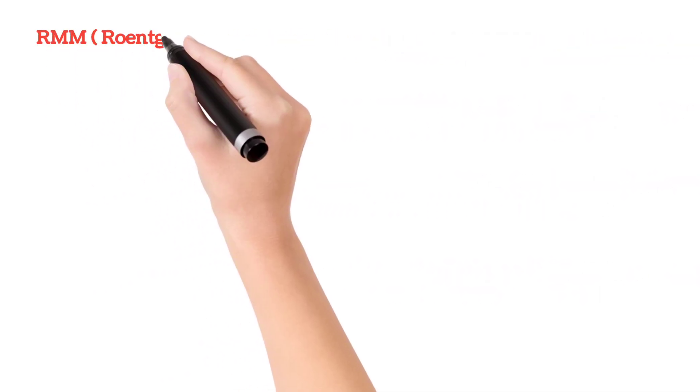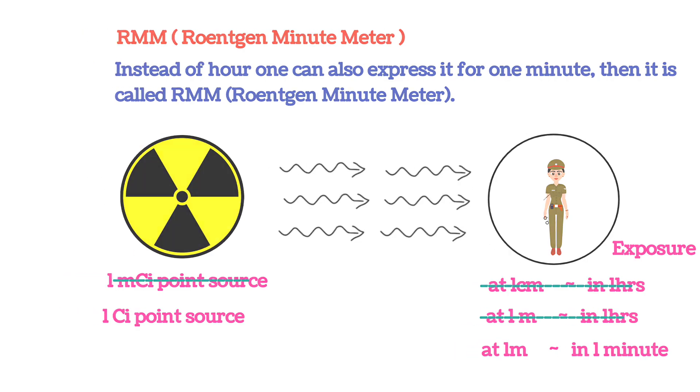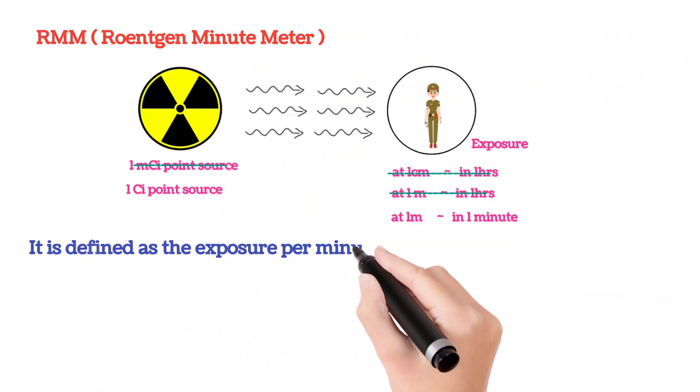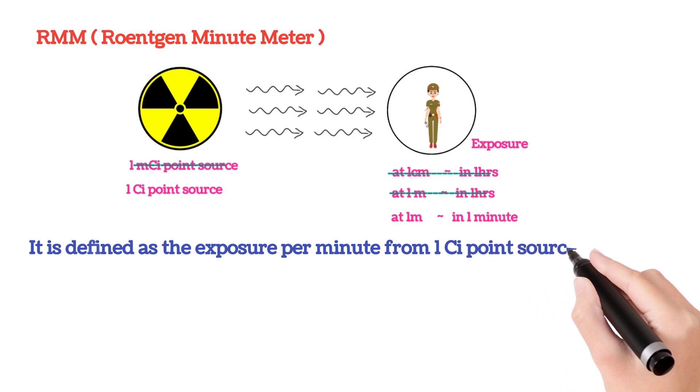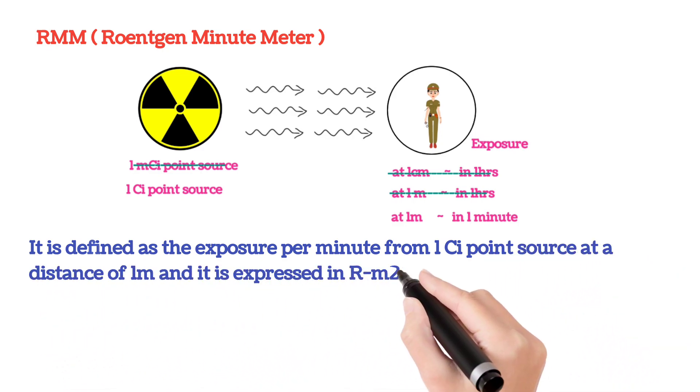Instead of per hour, we can also express it for 1 minute, then it is called RMM, roentgen minute meter. It is defined as the exposure per minute from 1 curie point source at a distance of 1 meter, and it is expressed in roentgen meter square per curie minute.